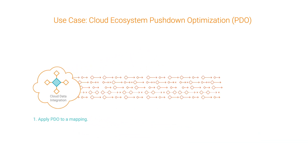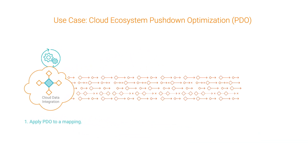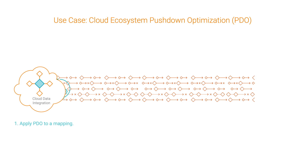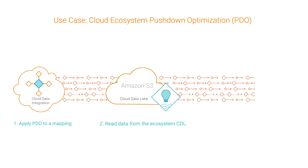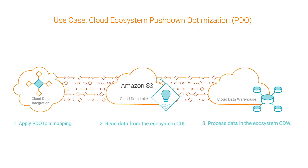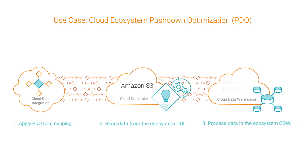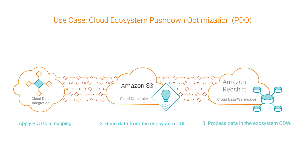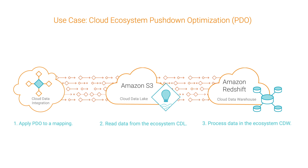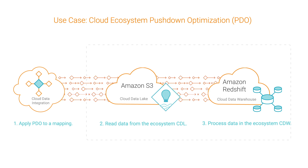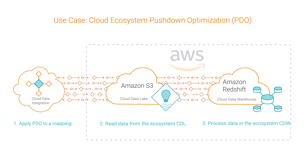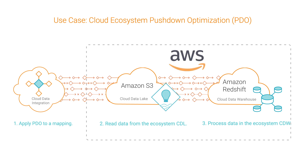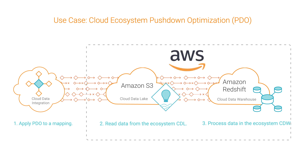With Ecosystem Pushdown Optimization, you read data from a Cloud Data Lake — for example, Amazon S3 — and use native Amazon Web Services commands to write data to a Cloud Data Warehouse within the ecosystem, like Redshift. Then, you process the data natively in the Cloud Data Warehouse. Keeping the data movement within the AWS ecosystem while you transform it reduces both processing time and operating costs.